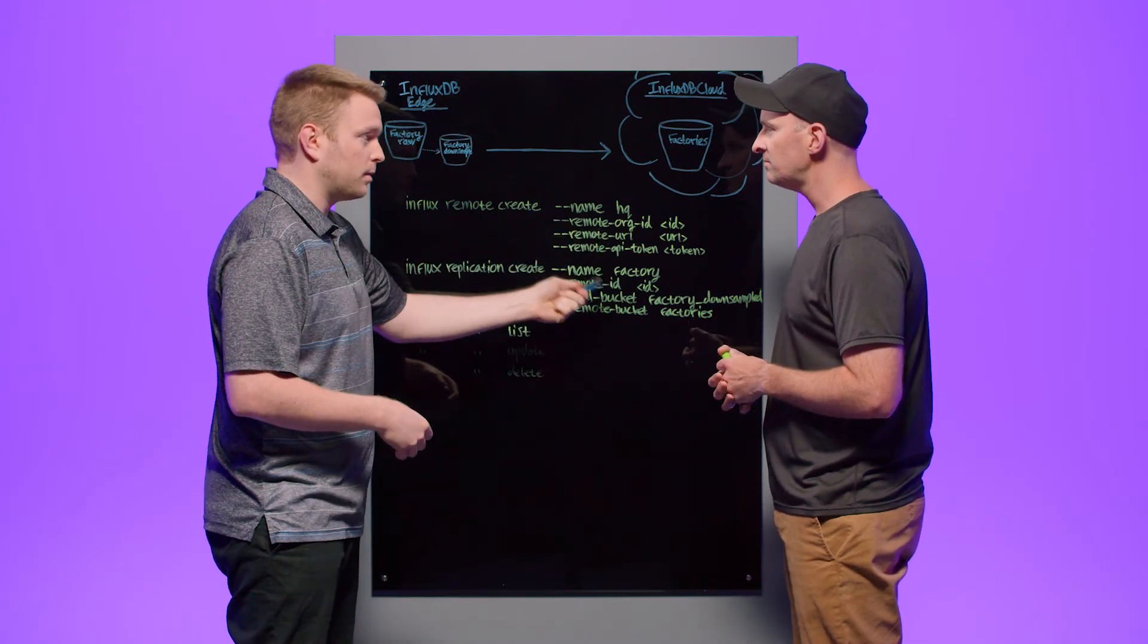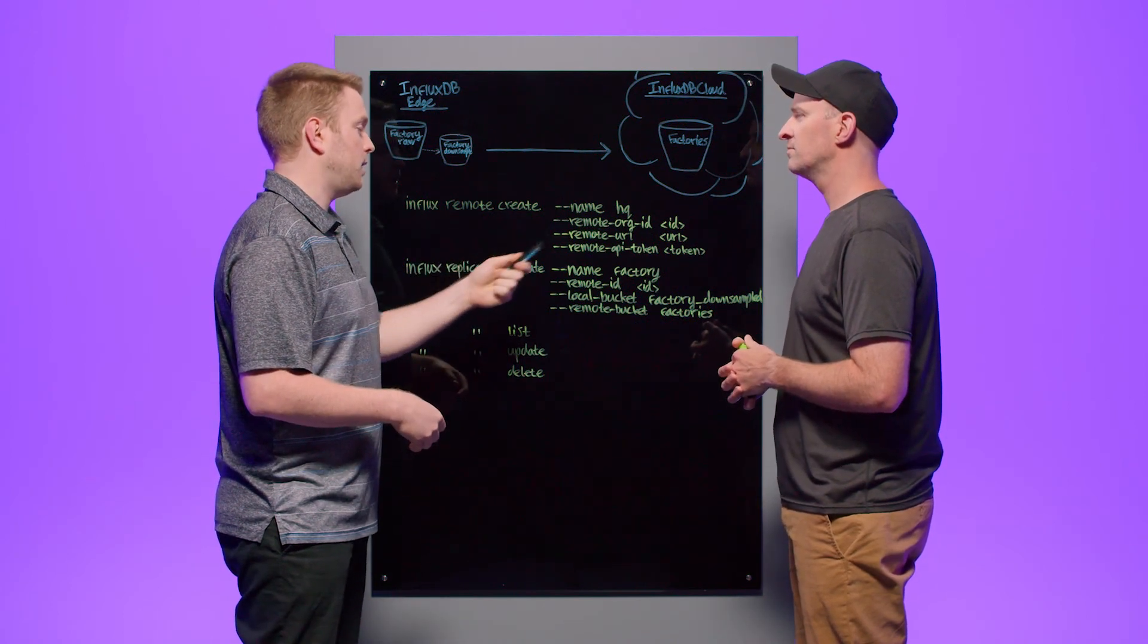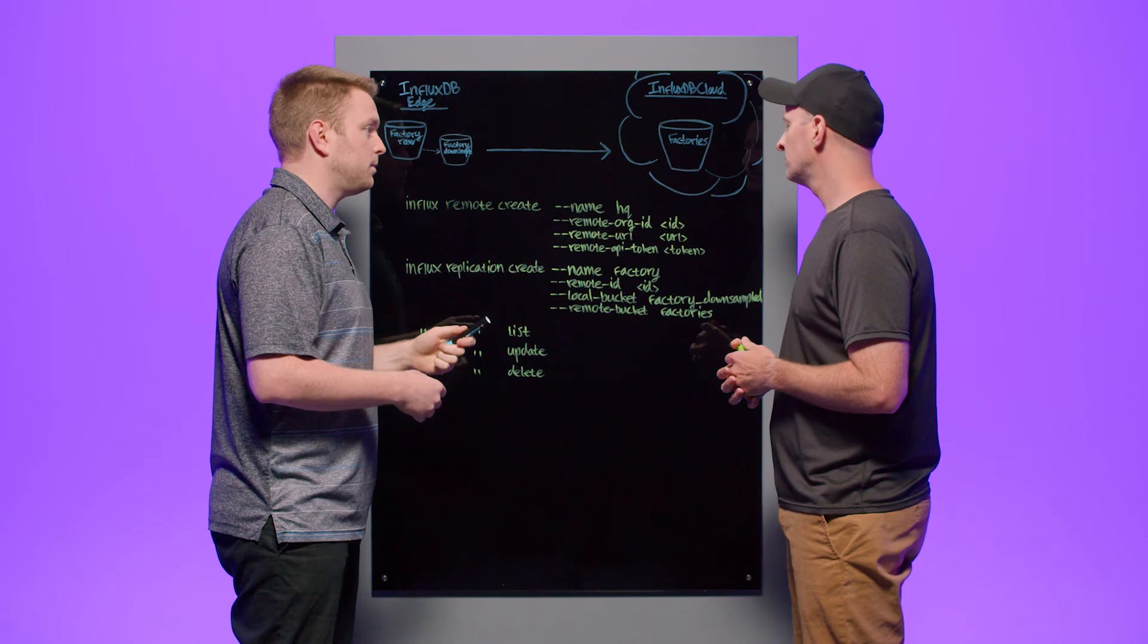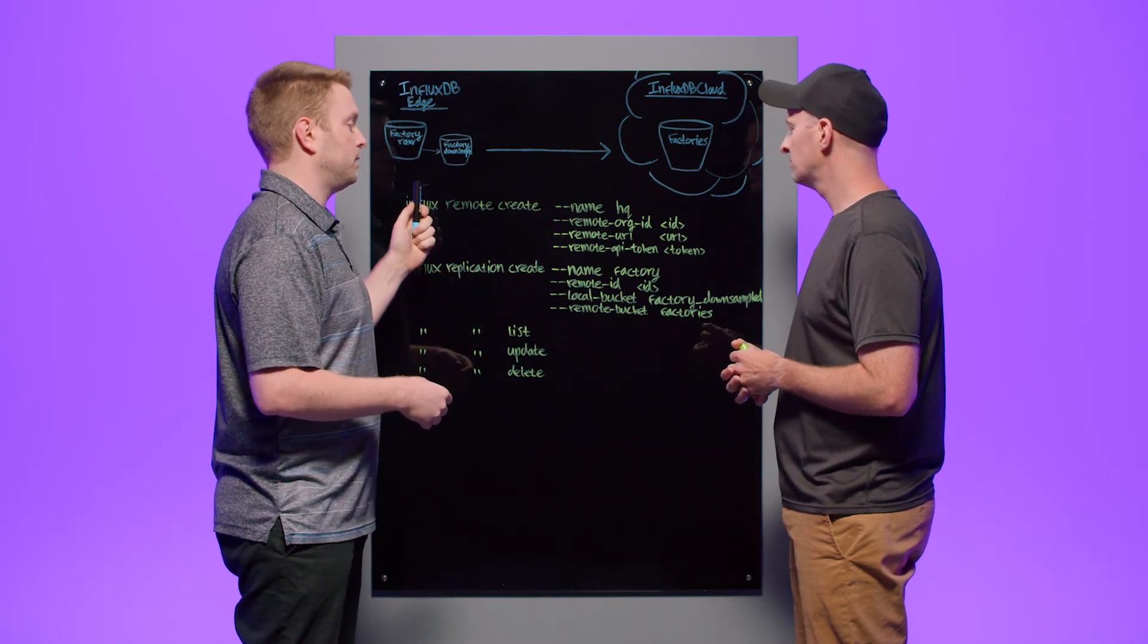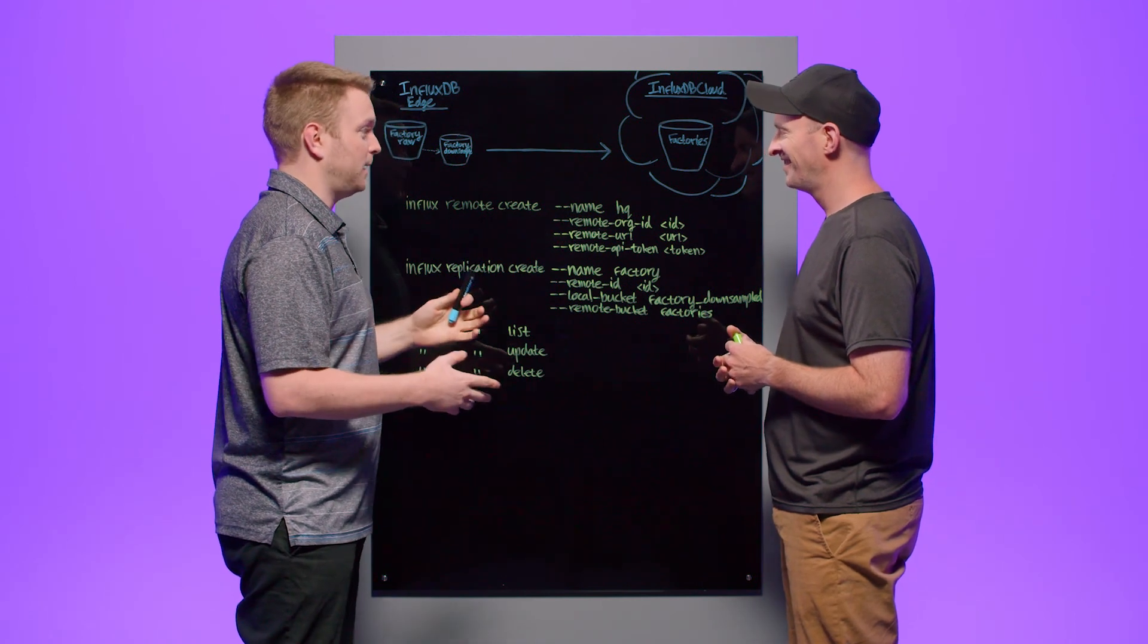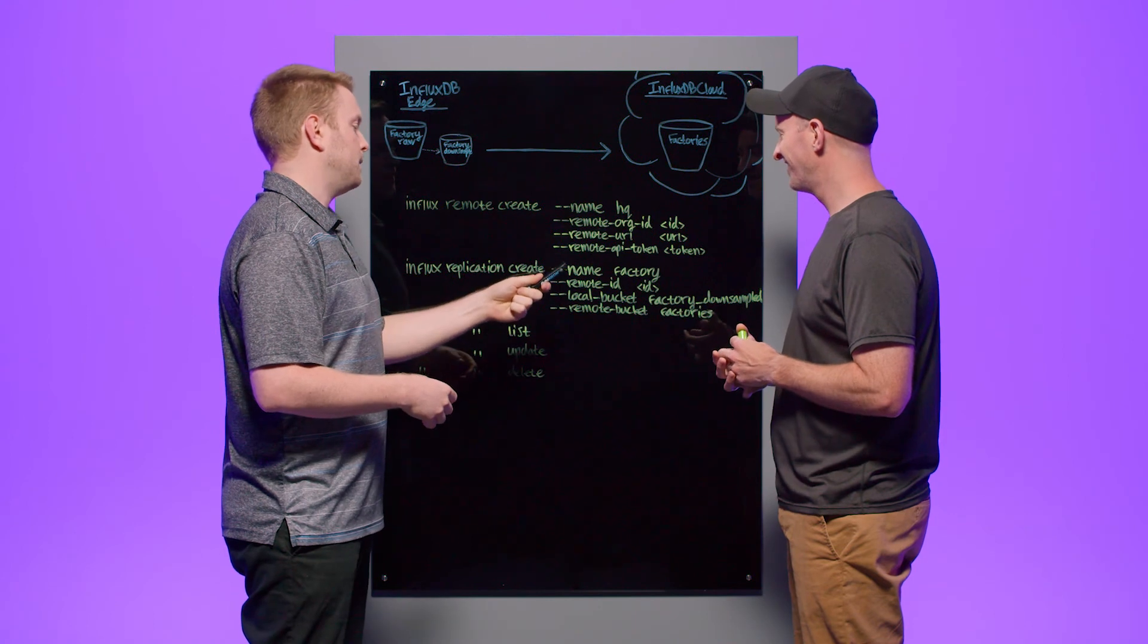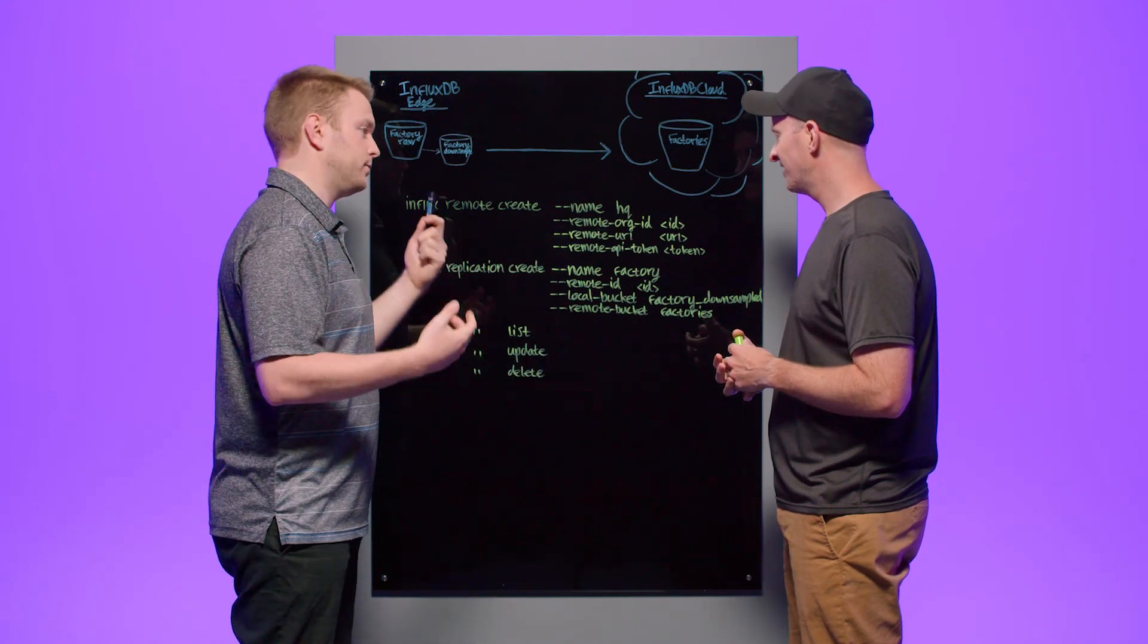So if I want to retrieve my remote ID for a new replication, I can list my remotes. I can update them. If I have an API token change in cloud or something like that, I can replace that. If I change a bucket name, for instance, in a replication, not recommended usually, but we have users that do it. And for good reason sometimes. If that happens, you can update that and then we can just do deletes for cleanup.